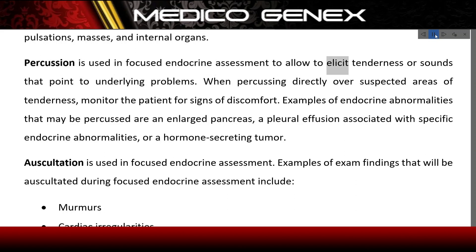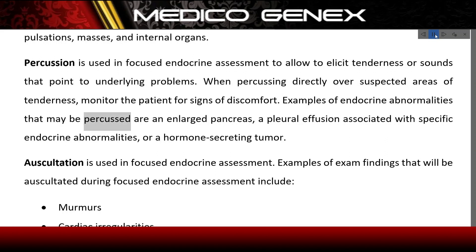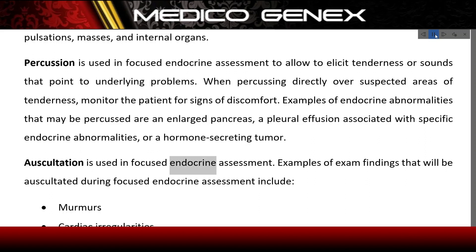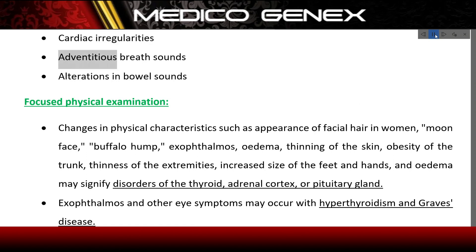Palpation allows assessment of texture, tenderness, temperature, moisture, pulsations, masses, and internal organs. Percussion is used to elicit tenderness or sounds pointing to underlying problems; monitor the patient for discomfort when percussing over suspected areas. Examples of findings that may be percussed include an enlarged pancreas, pleural effusion, or a hormone-secreting tumor. Auscultation is used to detect murmurs, cardiac irregularities, adventitious breath sounds, and alterations in bowel sounds.